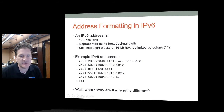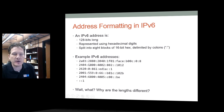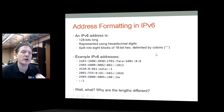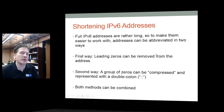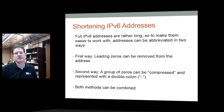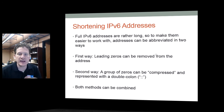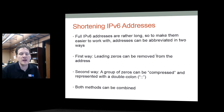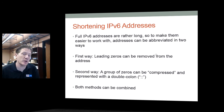Full IPv6 addresses are really long, so to make them easier we've abbreviated them in a couple of ways. First, leading zeros can be removed from any block. Second, a group of consecutive zero blocks can be compressed by using a double colon. You can also combine both methods together to create a very short address.